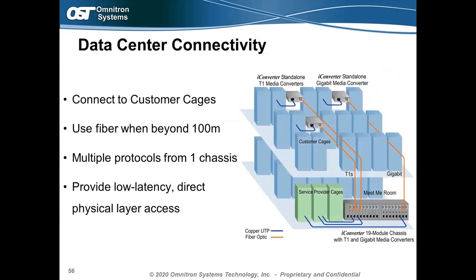Data centers are another major area for media converters. In a co-located data center, data from customer cages must be distributed beyond 100 meters or 328 feet. The iConverter platform accommodates media converters with different protocols — T1, Ethernet, Gigabit, or 10-Gig — running fiber links to customer cages where standalone media converters convert from fiber to copper to connect servers or switches.